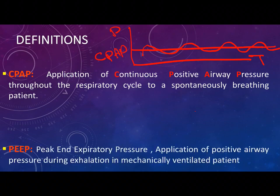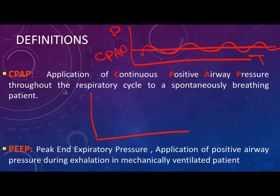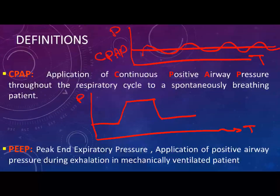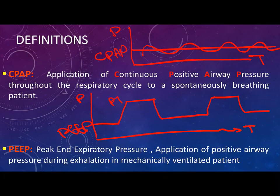PEEP, however, is the peak expiratory pressure — application of positive airway pressure during expiration in a mechanically ventilated baby. On the pressure-time curve, we have PEEP at baseline, which increases to PIP during inspiratory time, then another cycle and so on. So CPAP is the pressure during both inspiration and expiration in a non-ventilated or spontaneously breathing baby, whereas PEEP is applied during expiration in a mechanically ventilated baby.